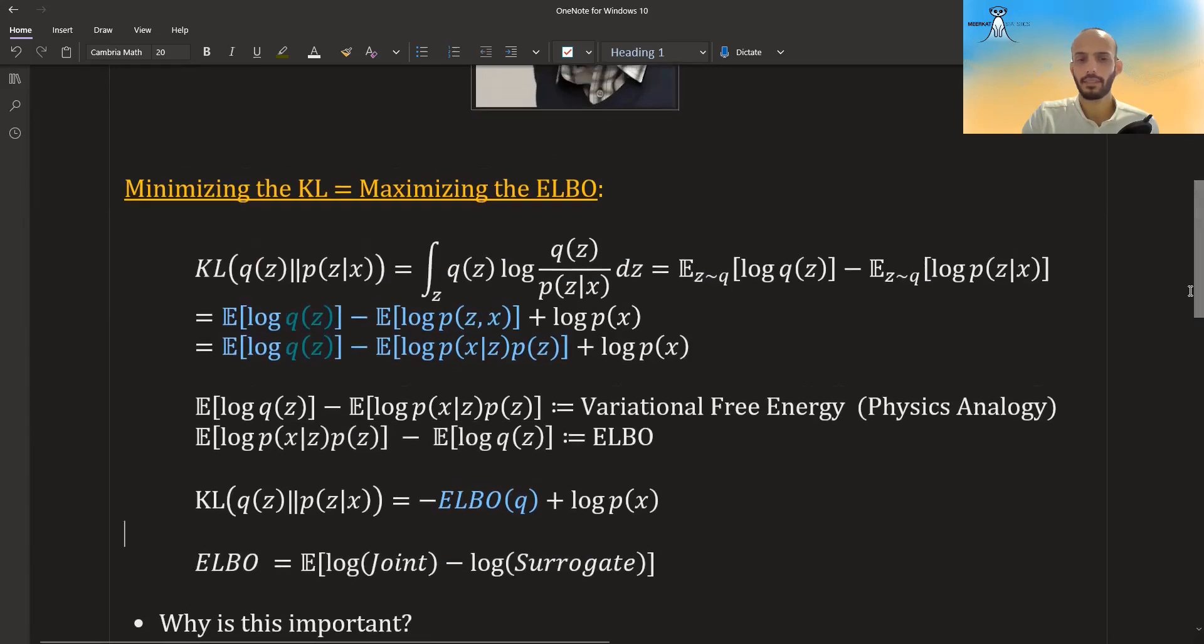Okay, and why is this important? I mean, why do we care about this thing over here? And I suggest maybe you pause the video for a few minutes and really think about it. Why is it important that the KL that we want to minimize is equal to some quantity that depends on Q plus the log of the evidence?